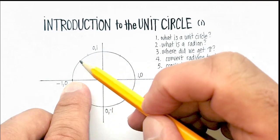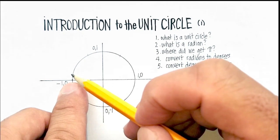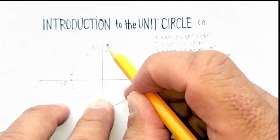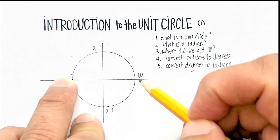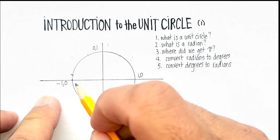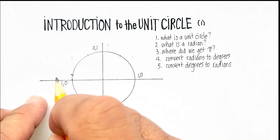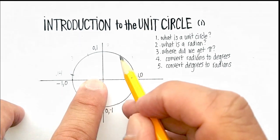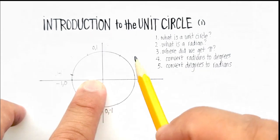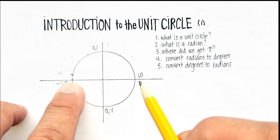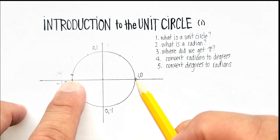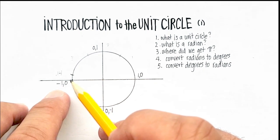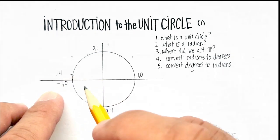Laying a third radius down, you'd think it would reach all the way to the bottom, but it doesn't — it stops just short. So I have one, two, three radians, and this last little bit is about 0.14 of the radius. So one, two, three point one four — the length of the circumference of the half circle is pi.